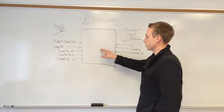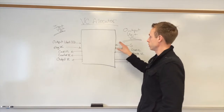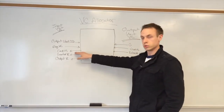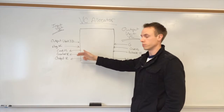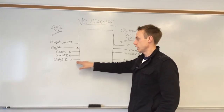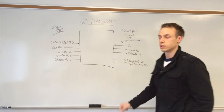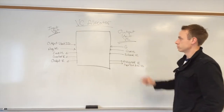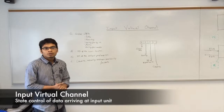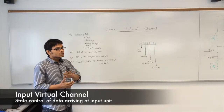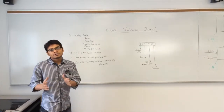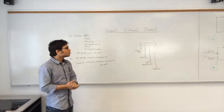It will actually route the output unit's virtual channel credits to the input unit virtual channel credits so that it can track appropriately, and output the output unit's virtual channel that's been assigned. At the input unit, we have four virtual channels, and each virtual channel has a state register associated to it.